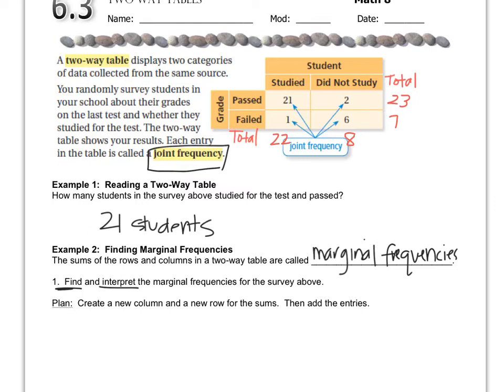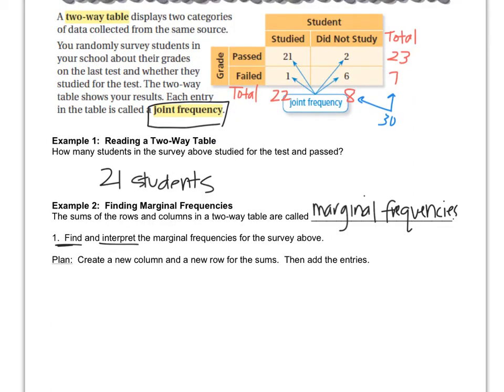One little tip: these two totals should be the same. You see, they both add up to 30 because that's how many people were surveyed. So you can always double-check your totals or your marginal frequencies by making sure they add up to the same number. All we have to do now is just write those numbers in sentences. So the first one is 22 people studied.